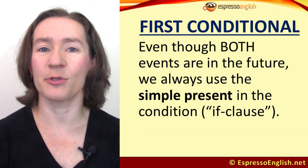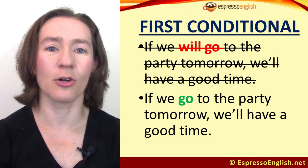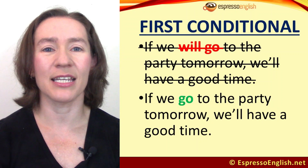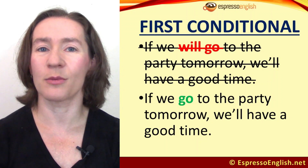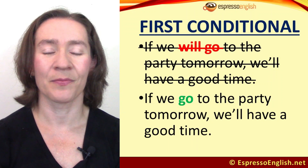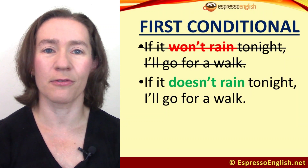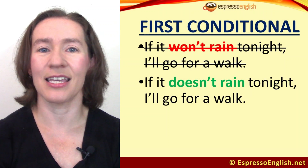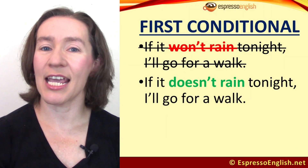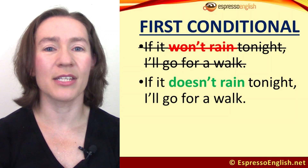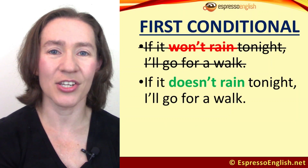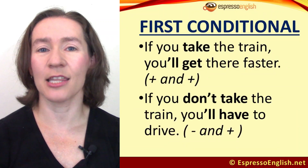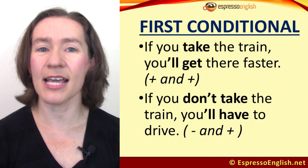It's a common mistake to use the simple future in the condition. So don't say 'if we will go to the party tomorrow, we'll have a good time.' The correct way is 'if we go to the party tomorrow, we'll have a good time.' Don't say 'if it won't rain tonight, I'll go for a walk.' The correct sentence is 'if it doesn't rain tonight, I'll go for a walk.' Both the condition and the result are in the future, but we use simple present in the condition and simple future in the result. Both the condition and the result can be positive or negative.